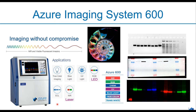If you really have to do strip and reprobe, please consider going for fluorescence Western, because repeated stripping can be disastrous for your protein quantitation.